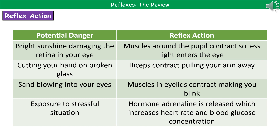The key place that reflex actions are used is to actually try to avoid danger or harm to the body. For example, if you're exposed to bright sunshine, you could damage the retina in your eye. To avoid that, your body is incredibly clever — the muscles around your pupil will contract, making the pupil smaller so less light enters the eye. You haven't had to think about that; your body just does it automatically, hence involuntary.